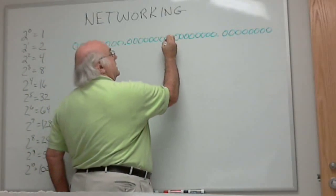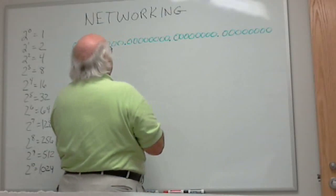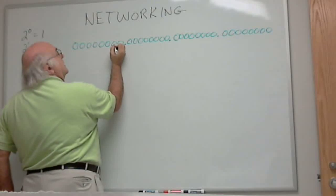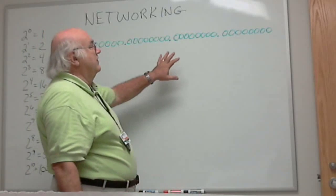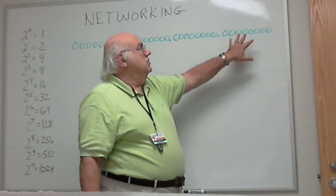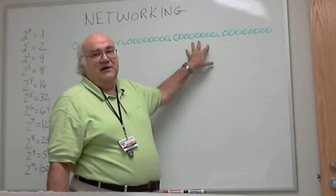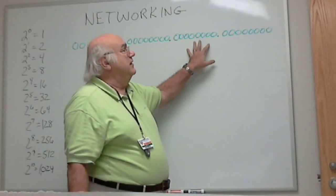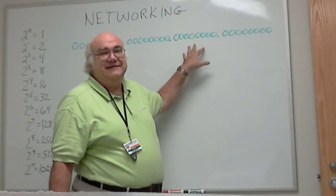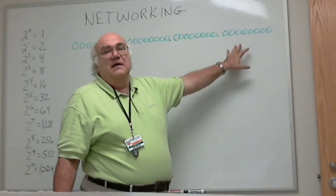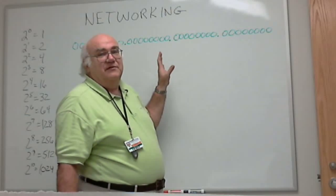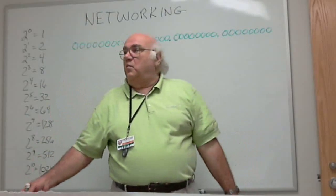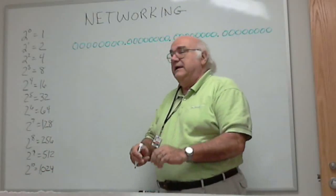We're not going to worry about those lines anymore. We're still going to worry about our dotted decimal. We still have that same concept. But why should I restrict myself to two bytes for host addressing when I only need 300 addresses? If I only need 300 addresses, why should I take 16 bits out of my address, which would give me a possibility of 64,000? Let's take a look at what we need, actually, to get 300.